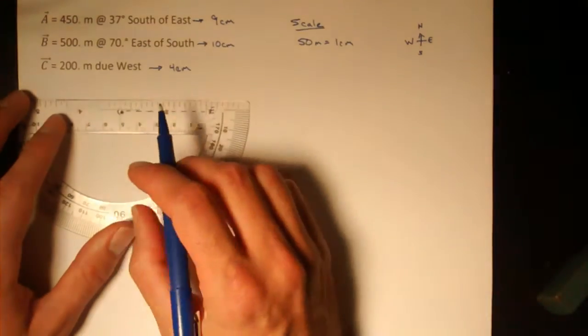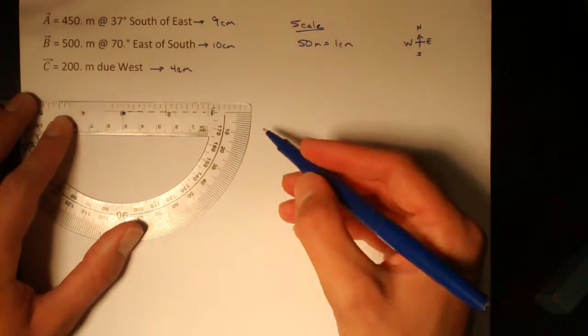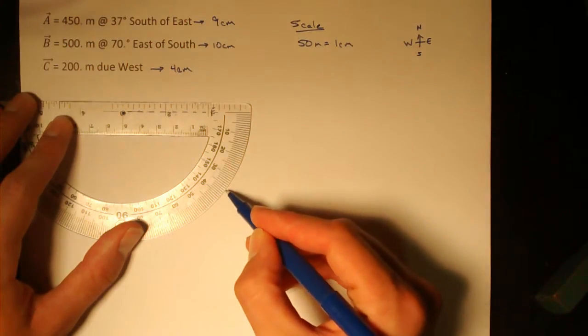I'll put my protractor with the hole right over my starting point, and 0 degrees right on the east line. And I'll measure 37 degrees south.